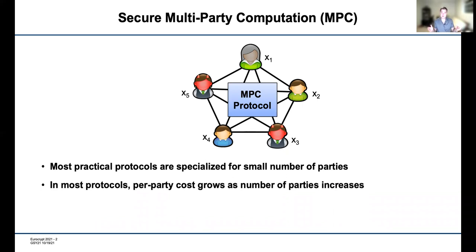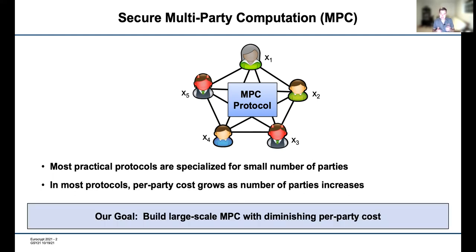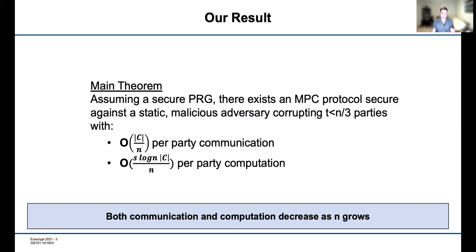So we're not getting savings from an increased number of parties — instead, the costs increase. This brings us to our goal: how do we build large-scale MPC such that the per-party cost diminishes as the number of parties grows? With this goal in mind, we achieve the following result.